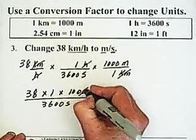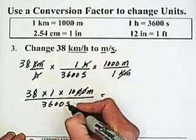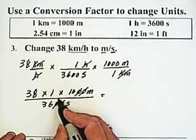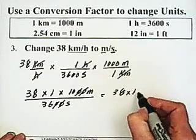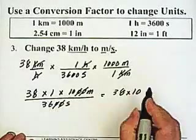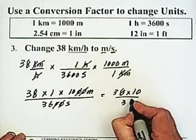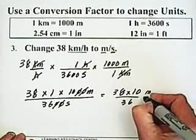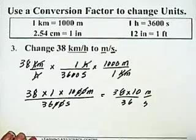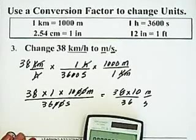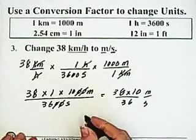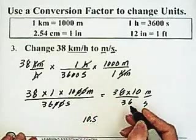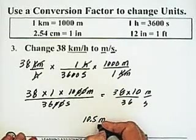I can cancel the two zeros from 1,000 and 3,600, leaving 38 times 10 divided by 36. Going to the calculator: 380 divided by 36 equals 10.5. So the answer is 10.5 meters per second.